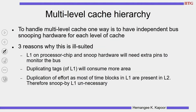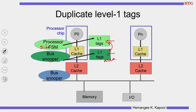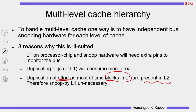The third reason is that we are actually duplicating effort. Most of the blocks in L1 are found in L2 as well. If a block is sitting in L1, very likely that block or its copy is also available in the L2 cache. So why do the repeated effort for both L1 and L2 when we can do it only at the L2 level and manage the correctness aspects? That is the third reason — we are duplicating effort because most blocks in L1 are also present in L2.